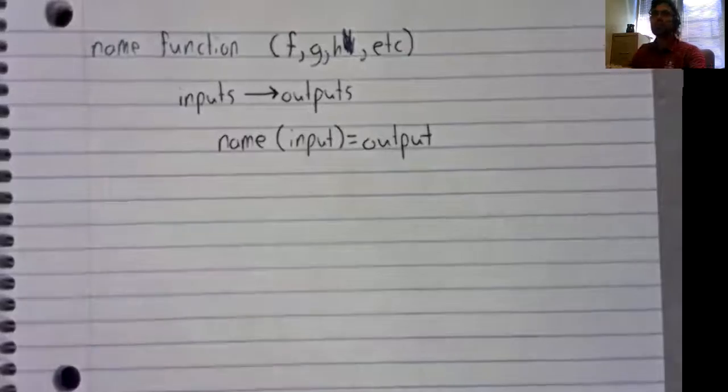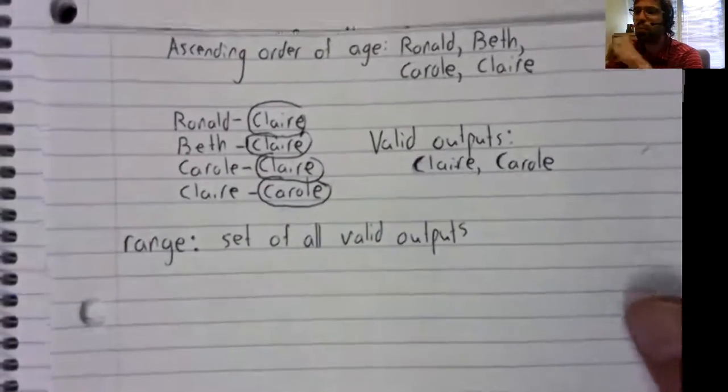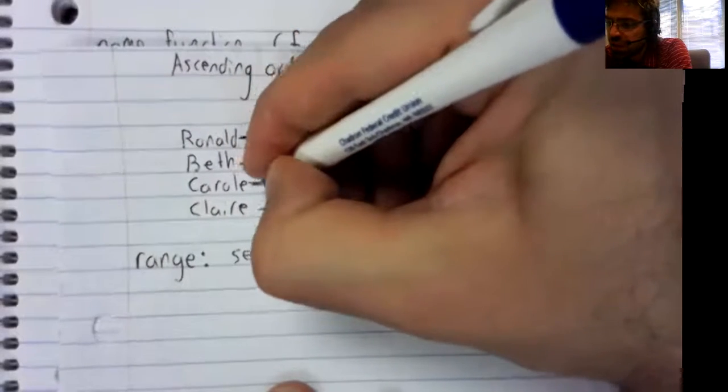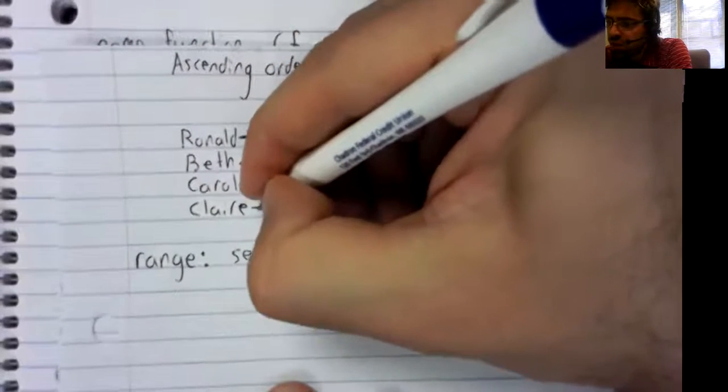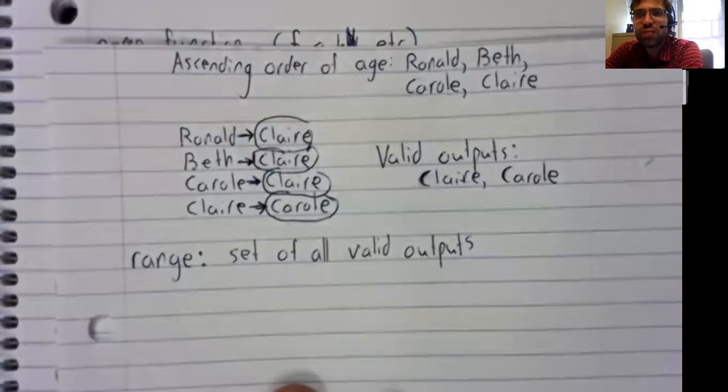So, let's clarify this with an example. And we'll keep the example we've been looking at. A family of four children. This function assigns each child to his or her oldest sister.